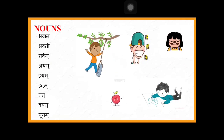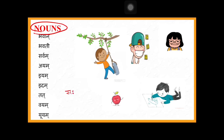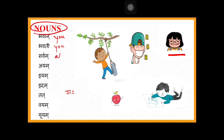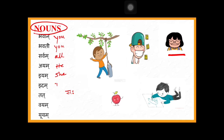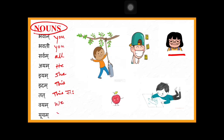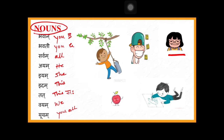Now let's learn some pronouns. We already know saha and esha. Bhavan means 'you' for masculine, bhavati means 'you' for feminine. Sarvam means 'all.' 'I am' refers to a boy — he — while 'sa' refers to her. Idam means 'this.' Bhavan is singular you for males, bhavati is singular you for females. Sarvam, meaning all together, has no gender.